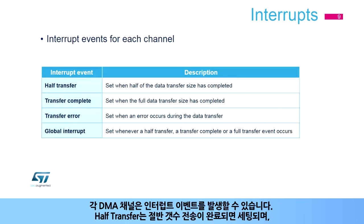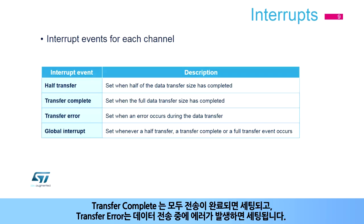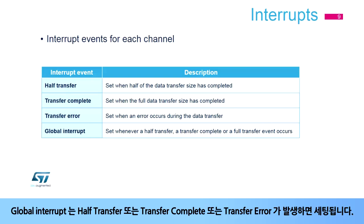The DMA channel is designed with this group of interrupt events. The half-transfer interrupt flag is set when half the data has been transferred. The transfer complete flag is set when the transfer is complete. The transfer error flag is set when an error occurs during the data transfer. The global interrupt flag is set whenever a half transfer, a transfer complete, or a transfer error event occurs.